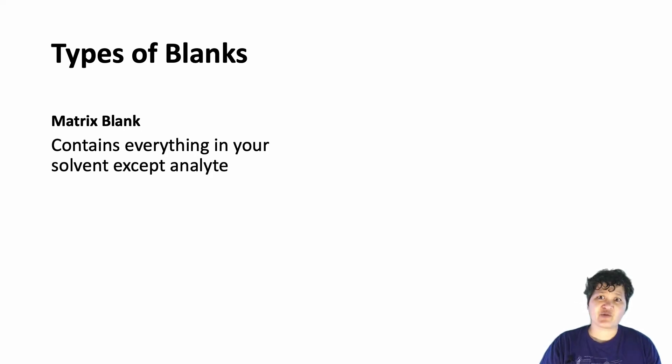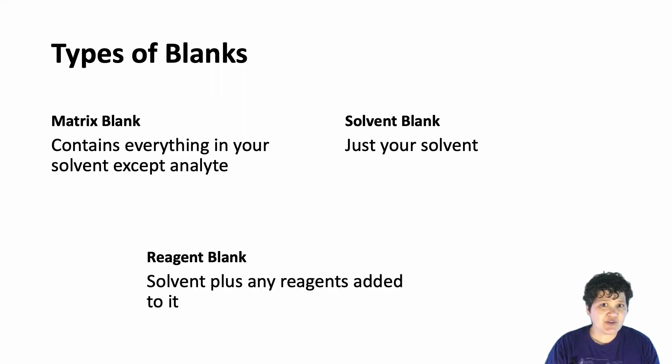The easiest sort of blank to create is a solvent blank, which is just a solvent. For natural water samples, your solvent blank would be DI water. Finally, if your method involves adding chemicals to your sample in order to take a measurement, you can create a reagent blank, which is your solvent, plus any reagents that you would add to a sample.